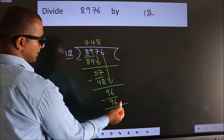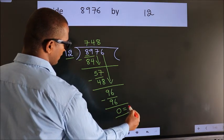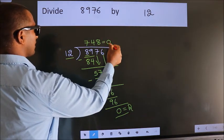No more numbers to bring it down. So, we stop here. This is our remainder. This is our quotient.